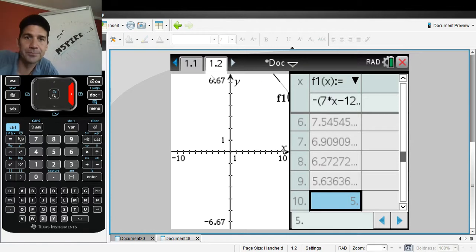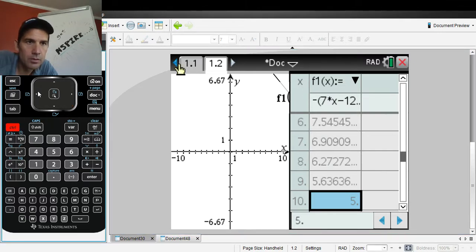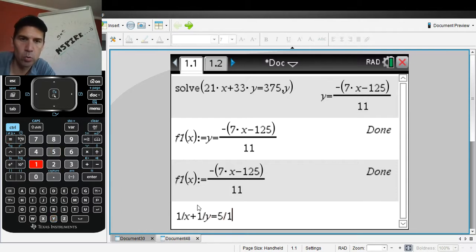Let's do another one. All right. Let us go back to, I'm going to hit control, this arrow guys. It will bring you back to this one. So now here's another equation that you oftentimes see where your variables are in your denominator. So it might be like 1 over X plus 1 over Y equals 5 over 12.